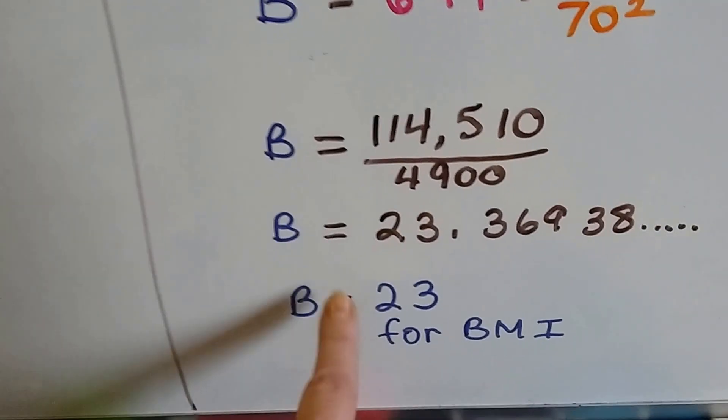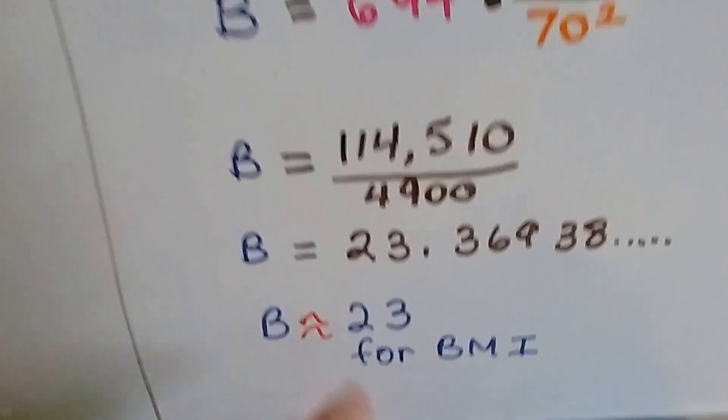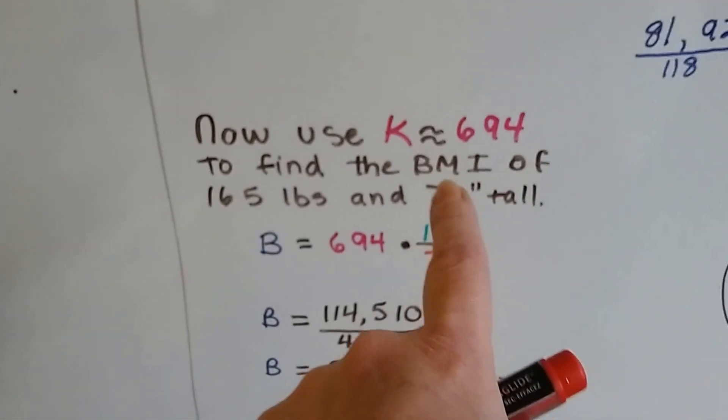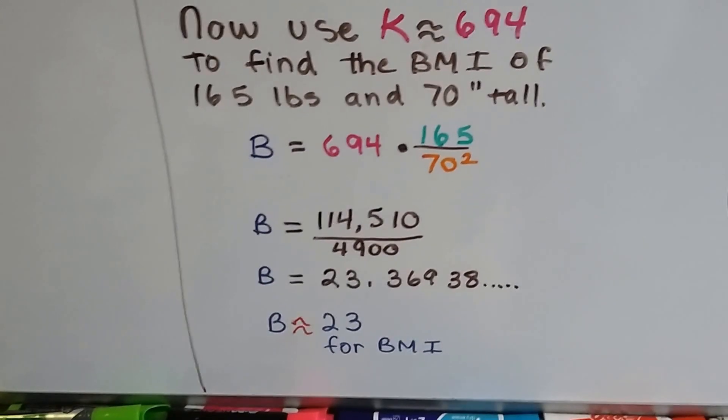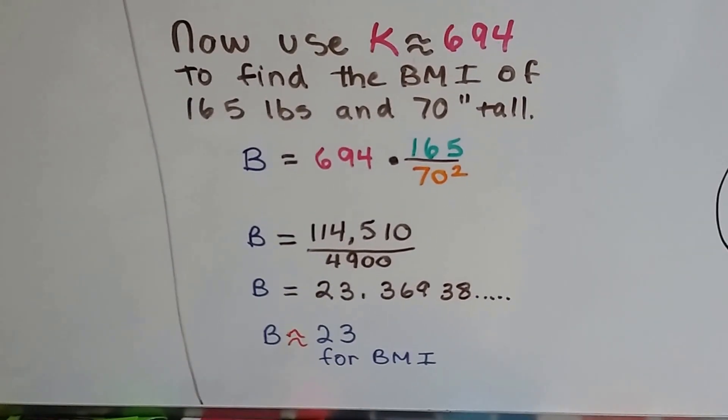Actually, this isn't an equals, is it? This is an approximate, because we were dealing with an approximate for K in the first place. So his BMI or her BMI is approximately 23.